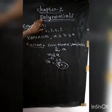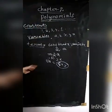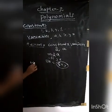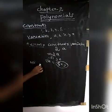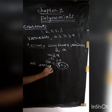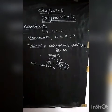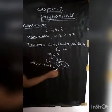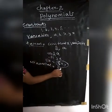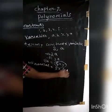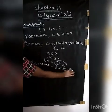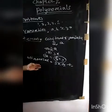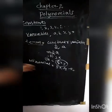Next, types of a polynomial. First one: monomials. Mono means one. A monomial has only one term — for example, 5X, 3Y, minus 4Z. Any expression with only one term is called a monomial.